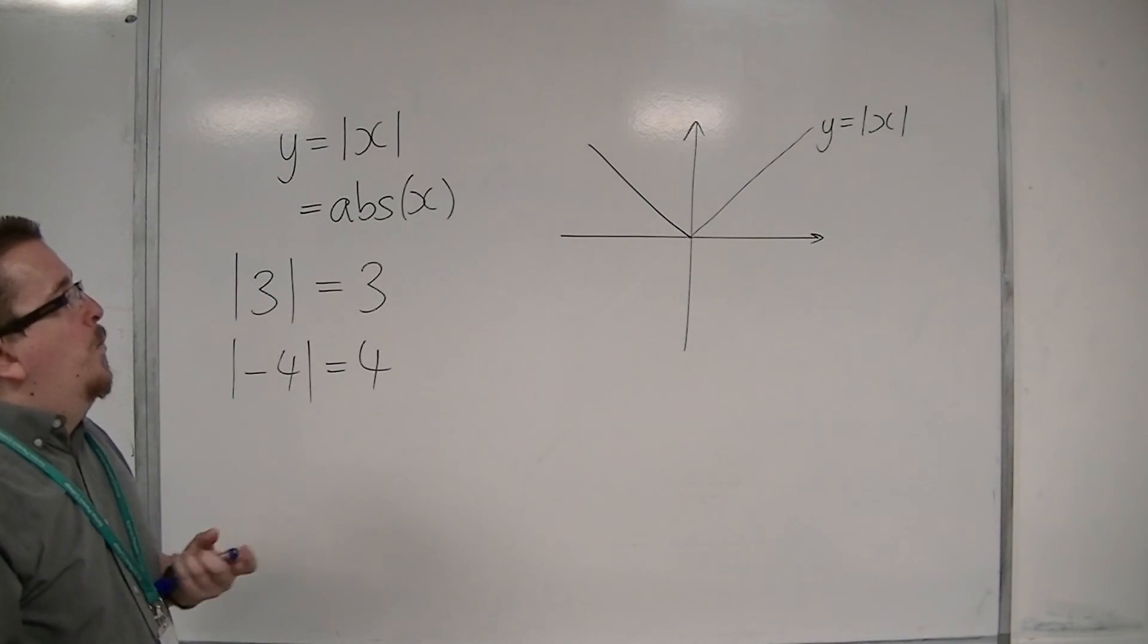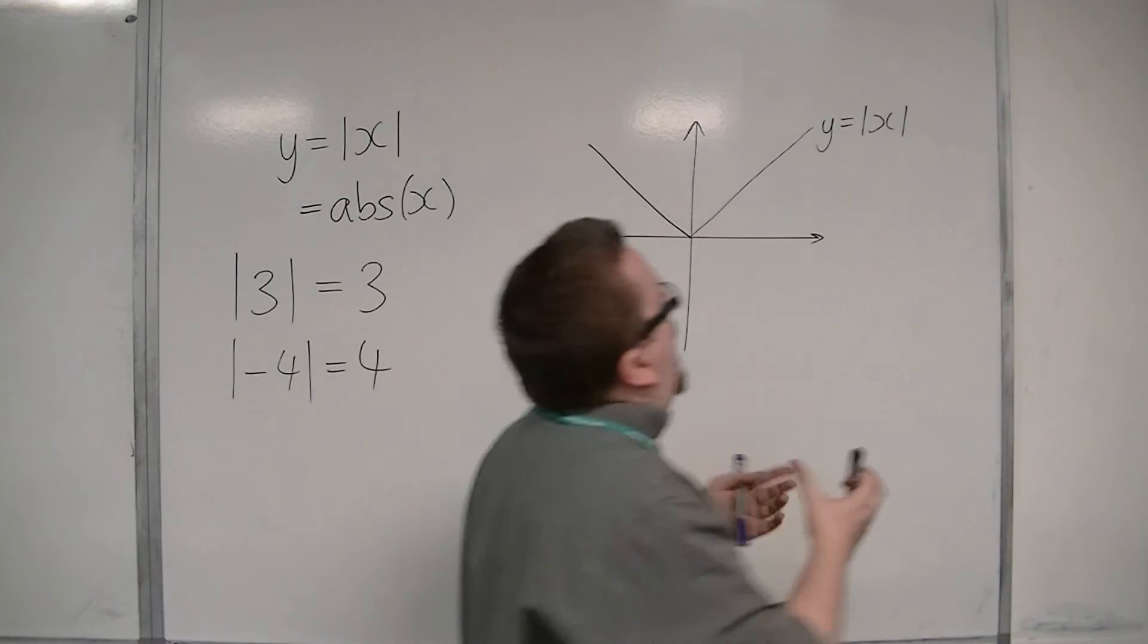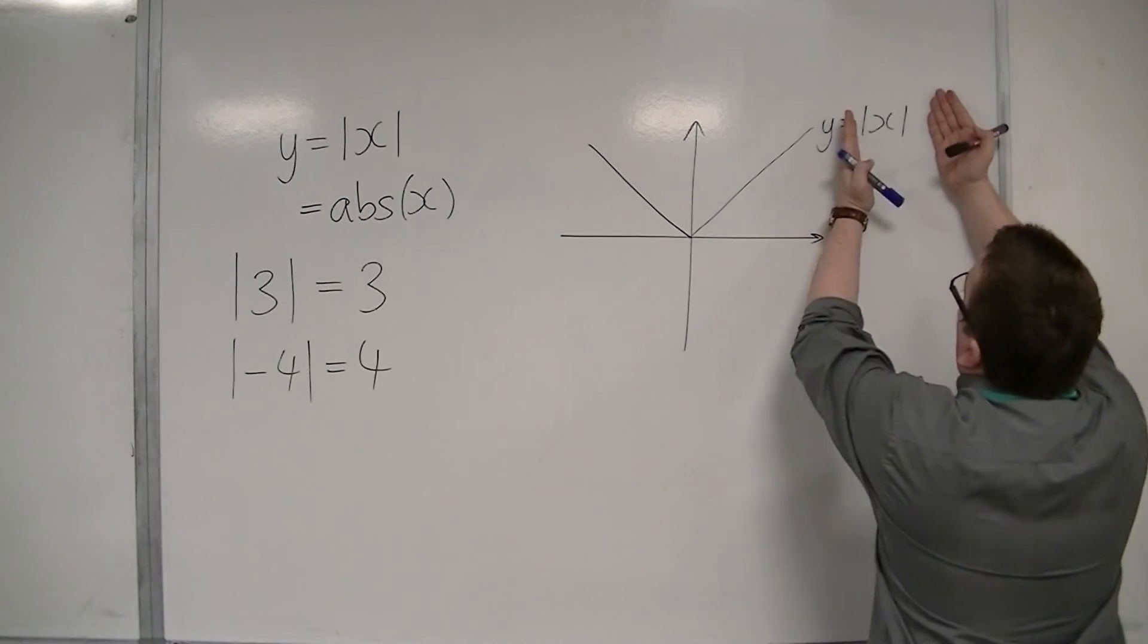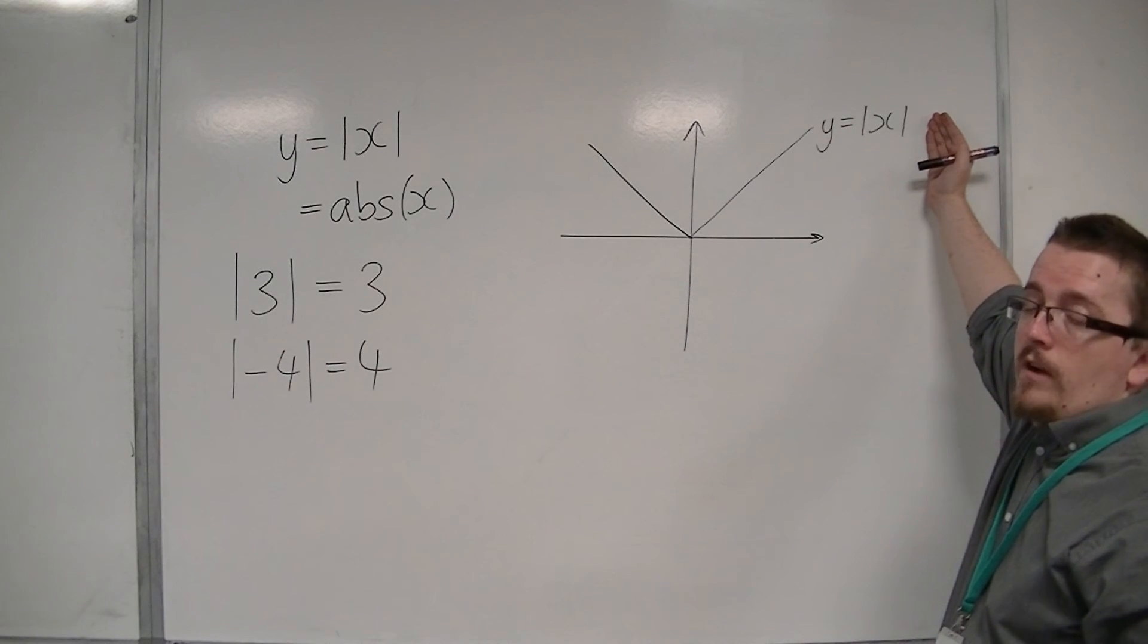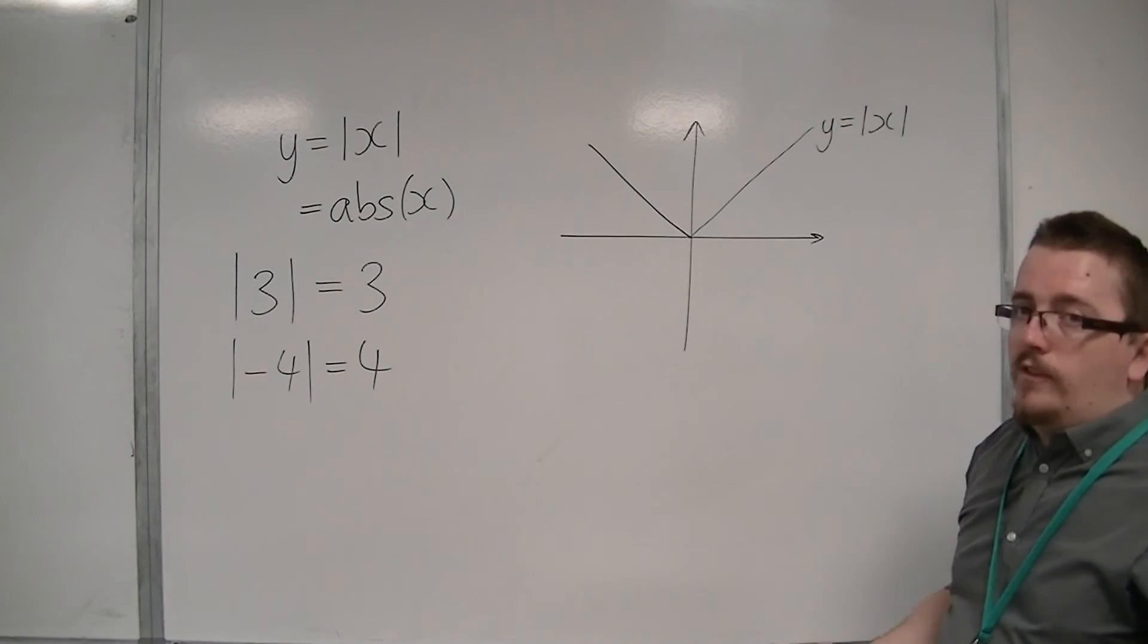What's happening is that because the modulus sign is around the whole thing, it is making sure that the graph doesn't go below the x-axis.